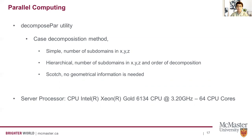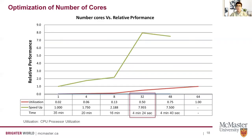We ran the simulations using a server processor with 3.2 GHz CPU and 64 cores. We found the optimal configuration could achieve around 8 times speedup by utilizing parallel computing in OpenFOAM with 32 cores. We can now fully simulate the same case in as little as 4 minutes — a game changer for batch analysis.